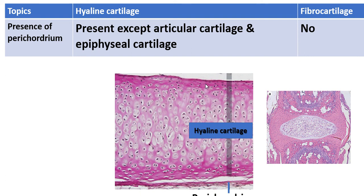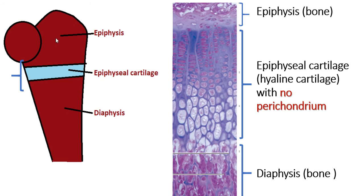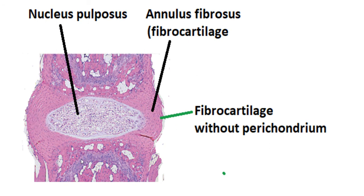The perichondrium is the covering of cartilage. In hyaline cartilage, perichondrium is present except in articular cartilage and epiphyseal cartilage. Fibrocartilage is devoid of perichondrium. This is articular cartilage — hyaline cartilage — but it is devoid of perichondrium. This is epiphyseal cartilage at the diaphysis, also devoid of perichondrium. This is fibrocartilage of the intervertebral disc, showing the nucleus pulposus and the annulus fibrosus — also devoid of perichondrium.